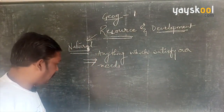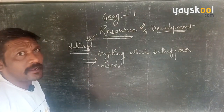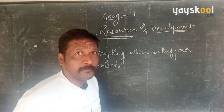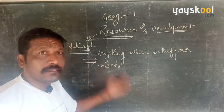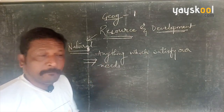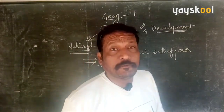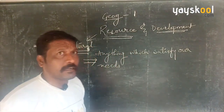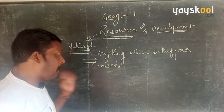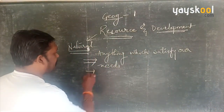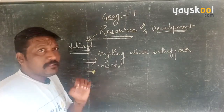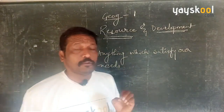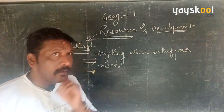For example, I need chalk to write on the board — then chalk is a resource for me. I need a board — then the board is a resource for me. So anything which satisfies my need is called a resource. But there are some parameters, some conditions which have to be fulfilled; only then will it become a resource, otherwise it will not.